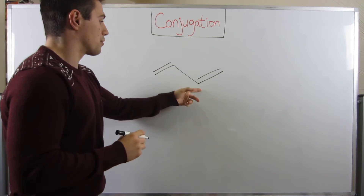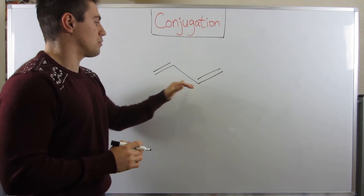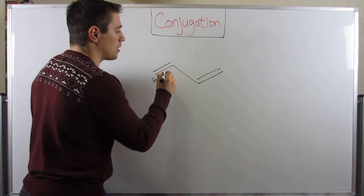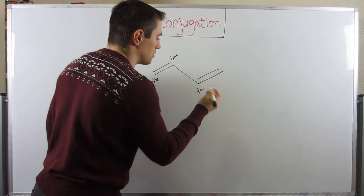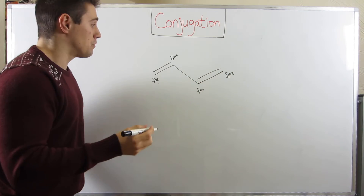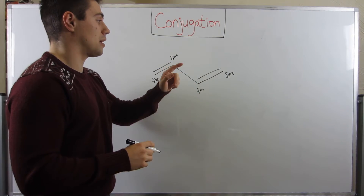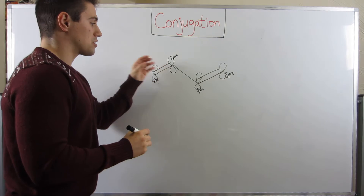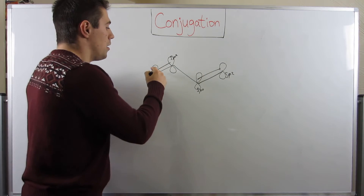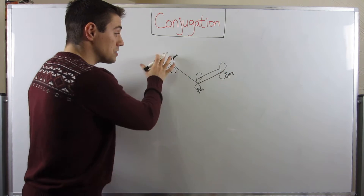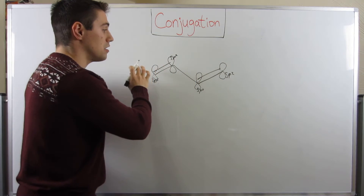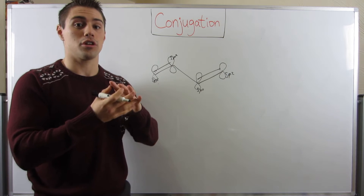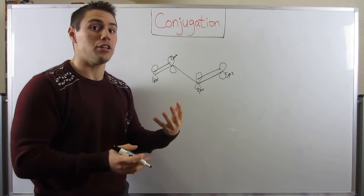If I draw 1,3-butadiene — a four-carbon chain with two double bonds — you can see that each carbon is SP2 hybridized, giving us four consecutive unhybridized P orbitals. When you have these networks of continuous P orbitals, the electrons in this pi electron system get smeared and shared across the network. Just like we've talked about with resonance, whenever you can distribute charge over a whole structure rather than keeping it in one static place, that's a stabilizing effect.